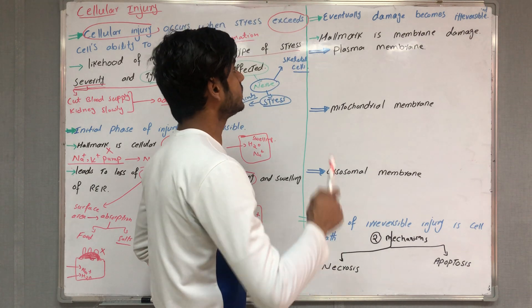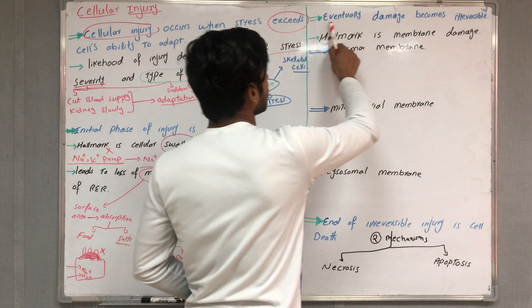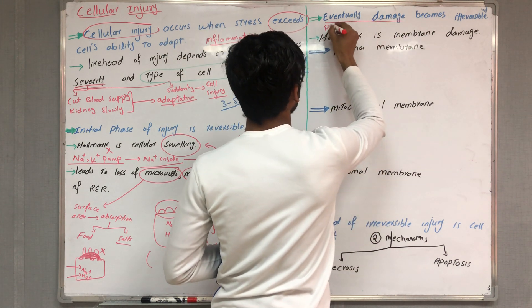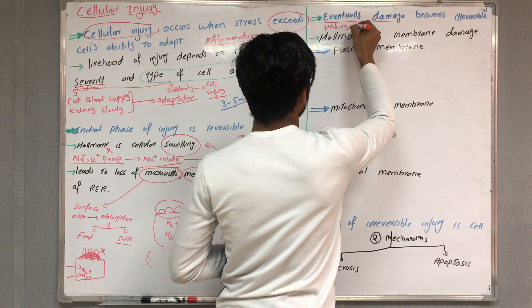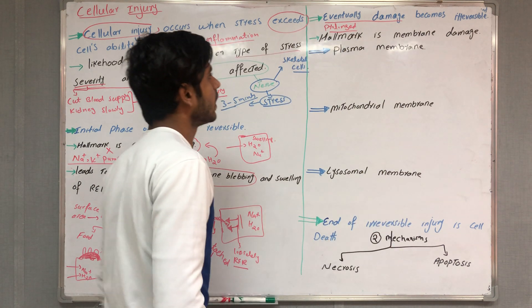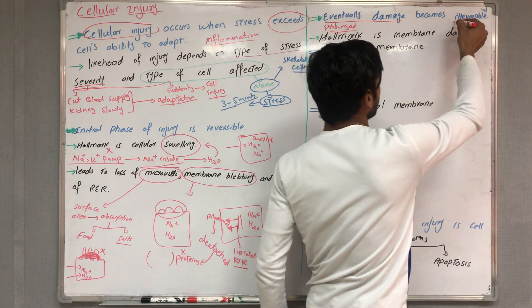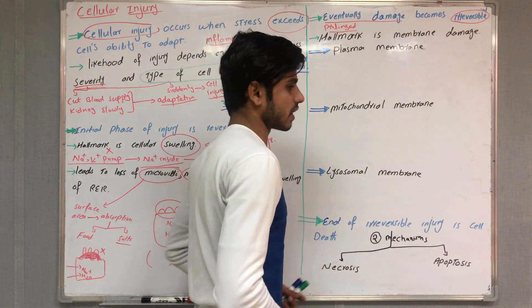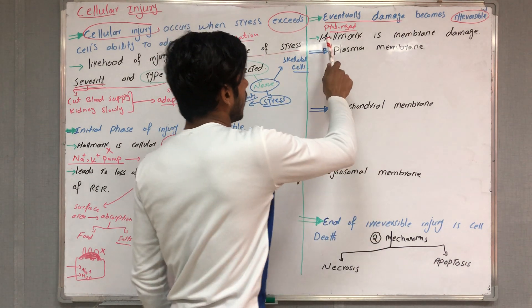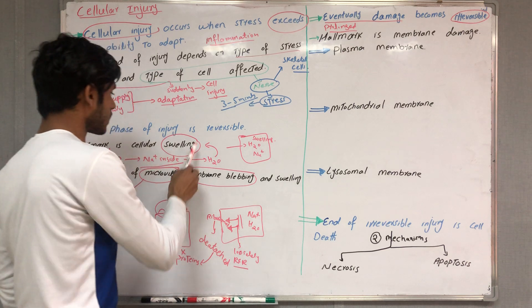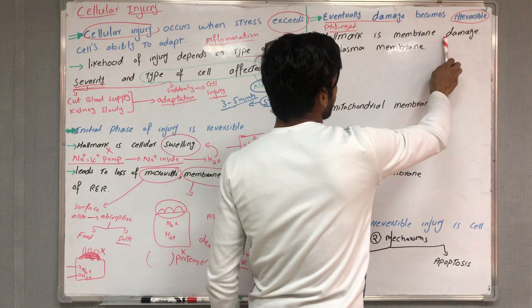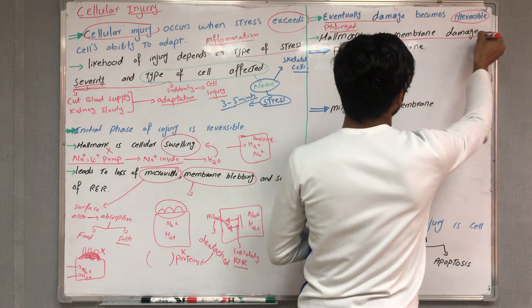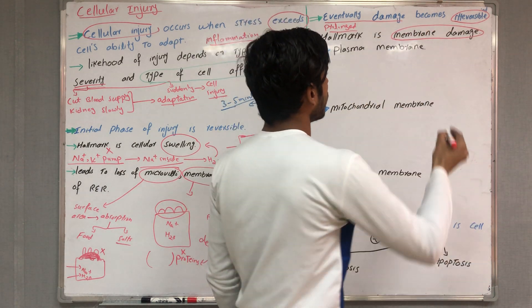Eventually, if the stress is prolonged and not removed, the reversible injury changes into irreversible injury. The hallmark of irreversible injury is membrane damage — whereas the hallmark of reversible injury was swelling. Three types of membrane can be damaged.